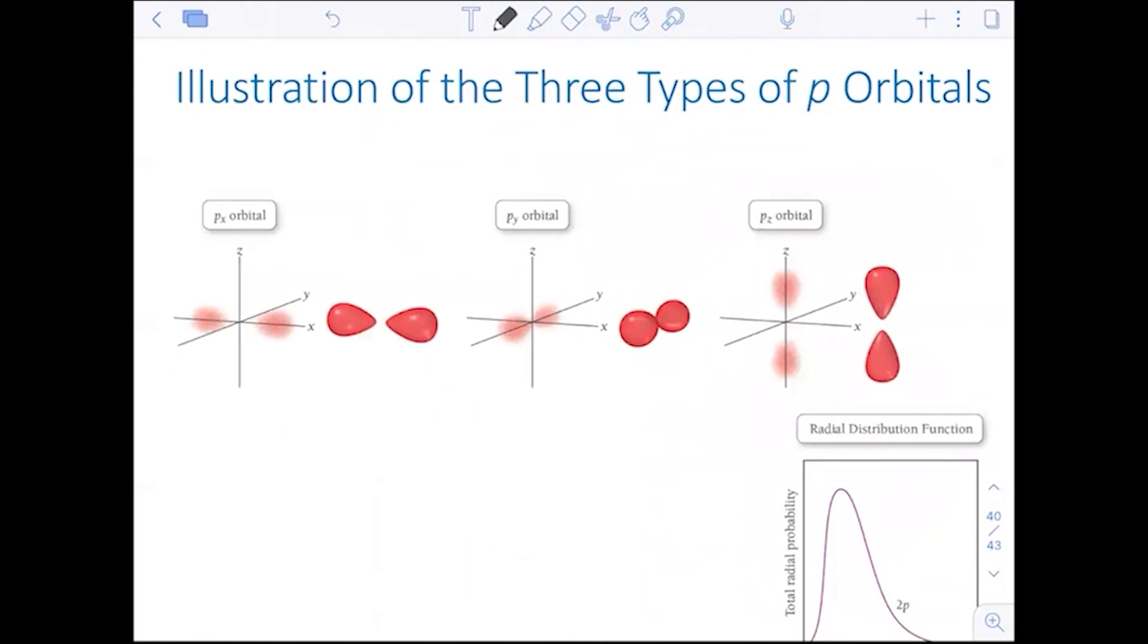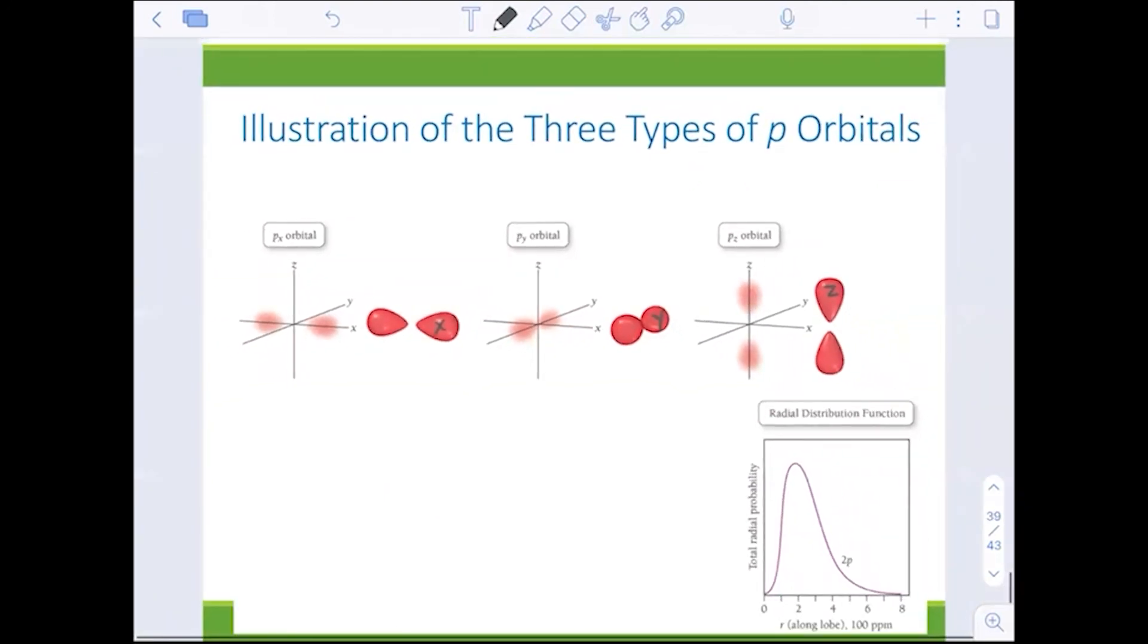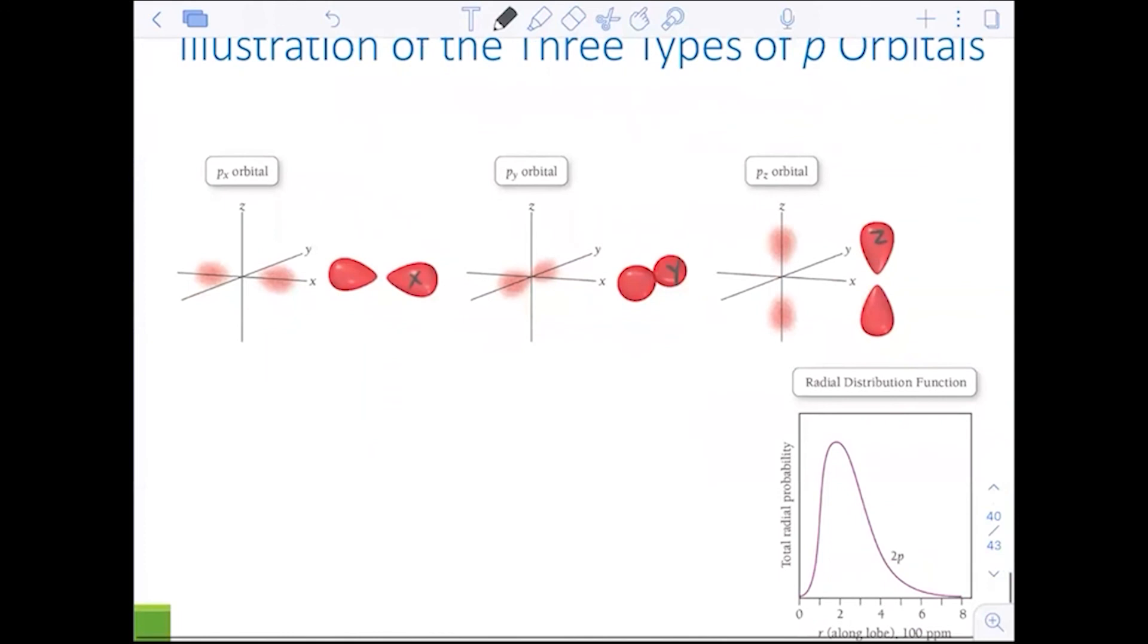Here are the p's, the illustration of the three types of p's on the x, the y, and the z. There's your x-axis, your y-axis, and your z-axis. And you don't need to know any of the radial distribution functions. It's just the shape itself and that probability scatter chart.